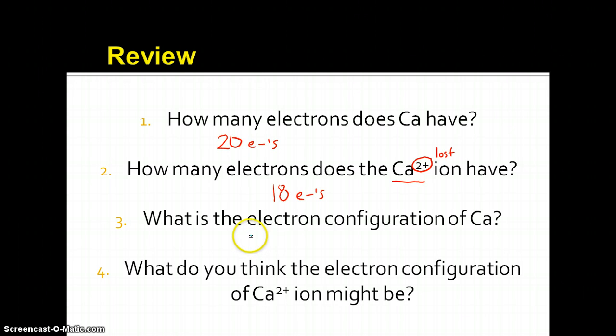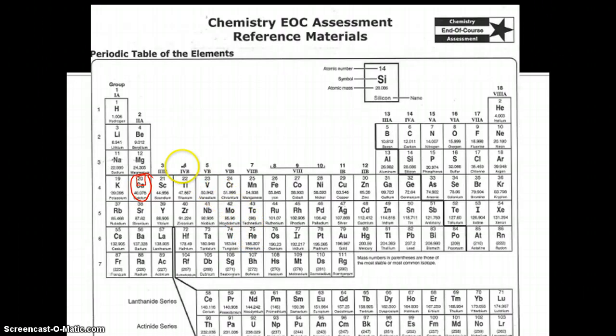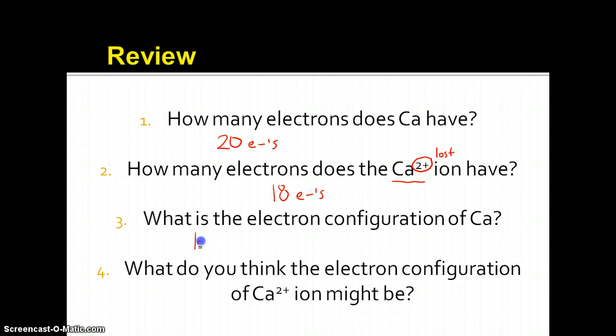And what is the electron configuration of calcium? Well, we can do this the long way. This is going to be 1s1, 1s2 for helium, 2s1, 2s2, 2p6. Then we're going to go all the way down here, 3s1, 3s2, 3p6, and then 4s2. So if I go back over here, I'm going to go 1s2, 2s2, 2p6, 3s2, 3p6, 4s2.